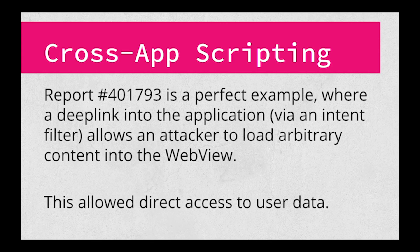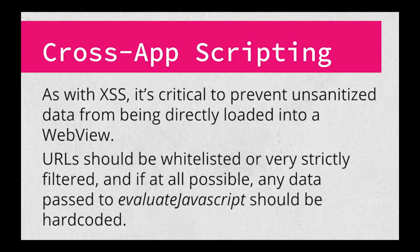Report 401793 is a perfect example of this bug. A number of application functions allowed deep links — links from outside the application to trigger specific functionality — which in this case allowed an attacker to load arbitrary pages in the web view. The developer had provided a function that allowed access to user details, which the attacker-controlled page was able to access as well. To fix this: any externally supplied data going to loadURL should be strictly whitelisted, at least at a domain level, but preferably at the full URL level. If an open redirect is discovered on your site, it may allow a compromise even with the domain whitelist in place. Second, the evaluateJavaScript function should only be used to run code contained in the application itself — allowing any external data here is likely to lead to code execution.